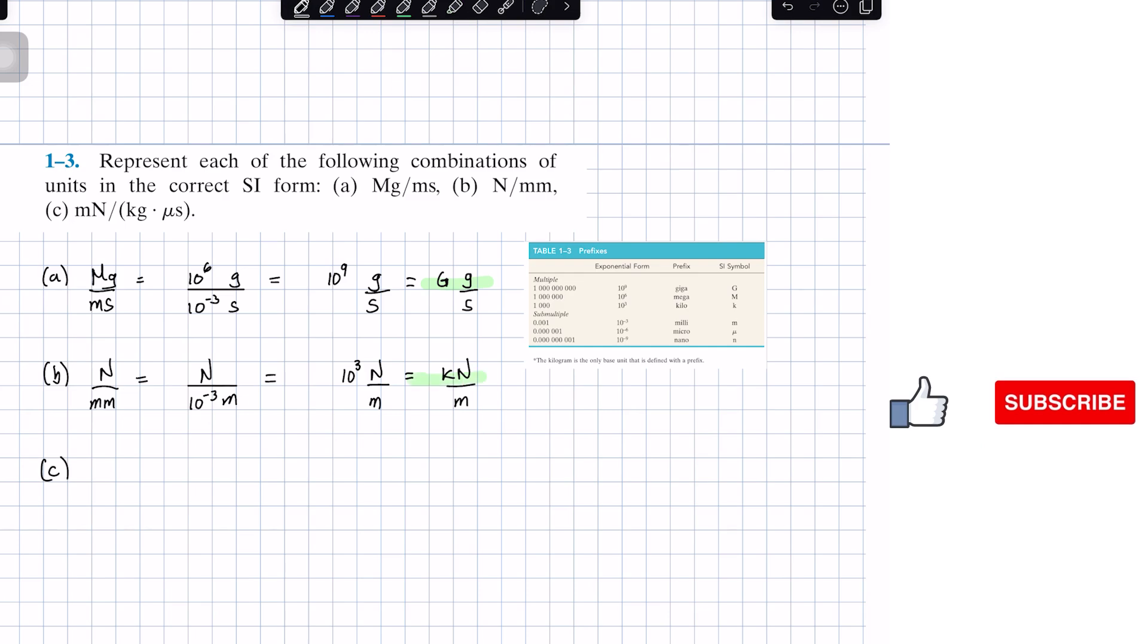Now we're going to do problem C. We got millinewton over kilogram times microsecond. For millinewton, we got 10 to the negative 3 Newton over kilogram. Notice that I'm leaving the kilogram as kilogram; sometimes we like to leave it as the base unit. The micro becomes 10 to the negative 6 seconds.